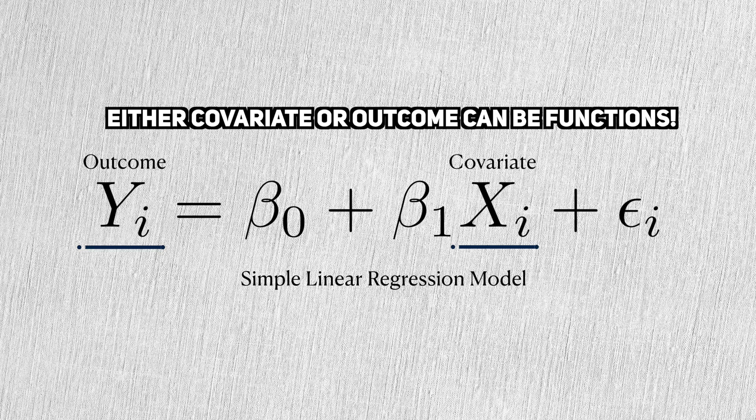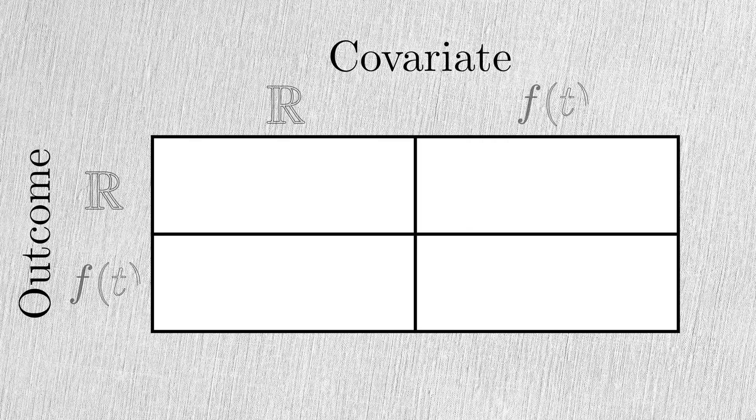In FDA, one or both of these scalars are replaced with a function. Depending on which one is the function, we can get three different flavors of functional regression.